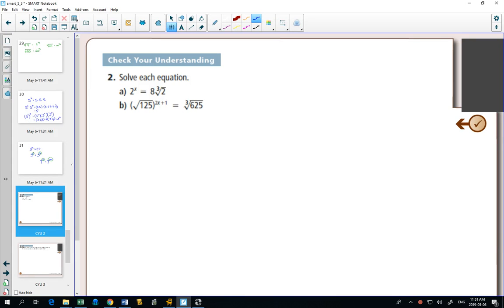Solve each equation. So now we just have more exponent rules. We have to look at both sides and say in A, is there a way that I can get both sides to be the same base?